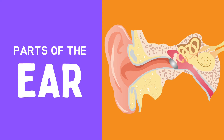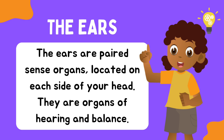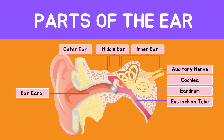In this video you will get to know about parts of the ear. The ears are the paired sense organs located on each side of your head. They are organs of hearing and balance.